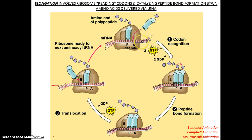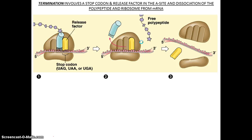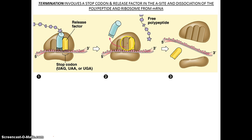This continues until the ribosome reaches a stop codon. There are several stop codons, and this is where a releasing factor binds. Once the releasing factor binds, the ribosomal subunits are all released and disassembled. You then have your free polypeptide, your mRNA, and the ribosomal subunits are now disassembled.